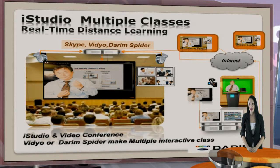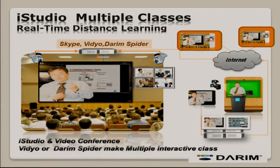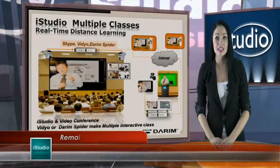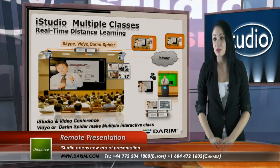iStudio makes it possible to set up multiple distance classes in real time. First, iStudio captures a video of a presenter and combines it with presentation materials into one single scene. Then a camera at a different location captures a video of students — every student watching the lecture is shown on the next screen. All students and the lecturer can see each other through Skype or Darum Spider.